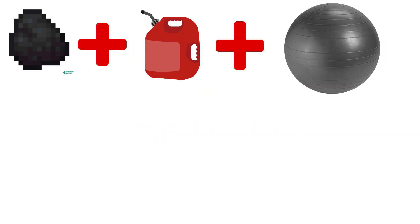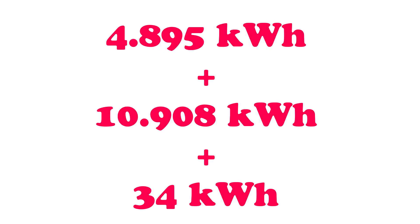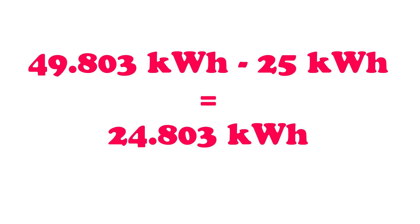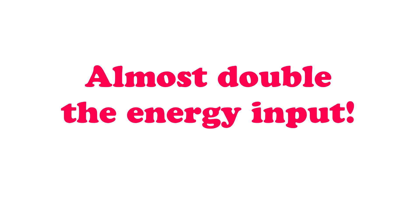Now we add the coal product plus the oil product plus the gas product: 4.895 plus 10.908 plus 34, and all of that together equals 49.803 kilowatt hours. The energy consumption of this run was 25 kilowatt hours, so 49.803 minus 25 gives us 24.803 kilowatt hours gained — that's almost double the energy input.